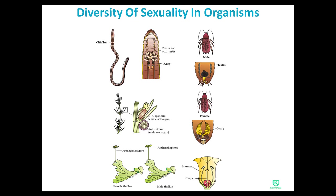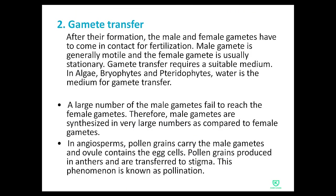In the earthworm, both testes and ovary are present in the same individual. So both male and female sexes are present in the same organism.